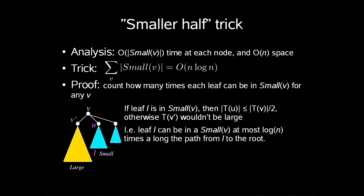To show how large this is, we use what is called the smaller half trick. So we show that the sum of the length of all Small(v) is O(n log n). Using O(|Small(v)|), we imply time O(n log n) in total. The proof for this is to count how many times each leaf can be in Small(v) for any v. So if leaf l is in Small(v), then |T(u)| ≤ |T(v)|/2, otherwise T(v') wouldn't be large. So in other words, leaf l can be in a Small(v) at most log(n) times along the path from l to the root.